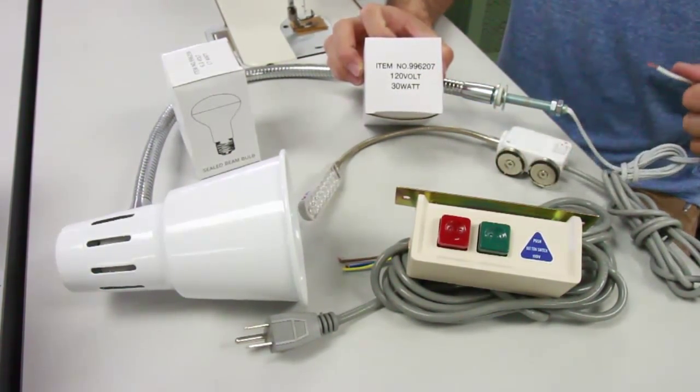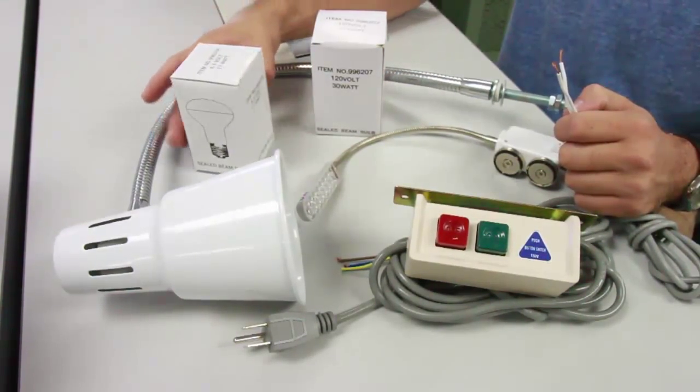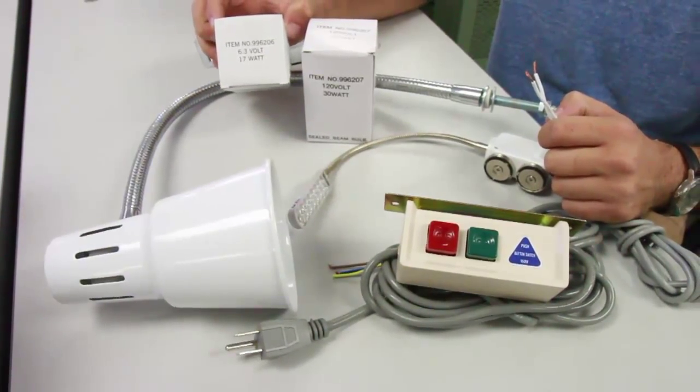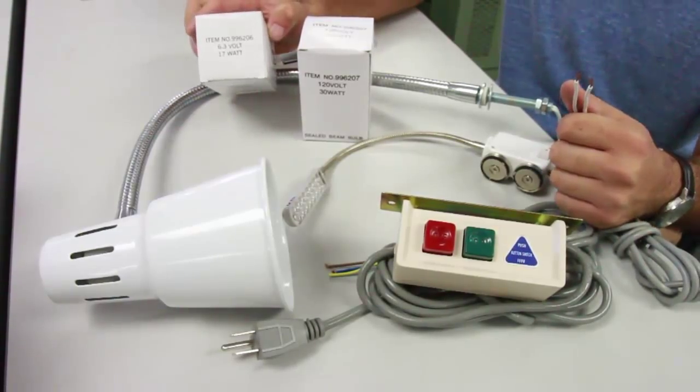If it connects directly into the motor, which is a lot easier, you will need this 6.3 volt, 17 watt bulb. If you mix and match them, it will burn something out and we don't want that to happen.